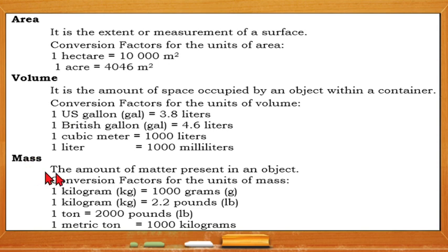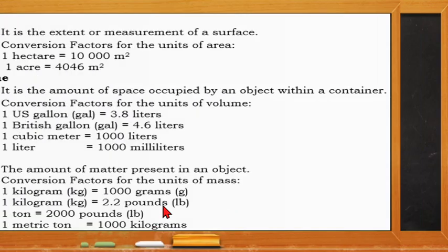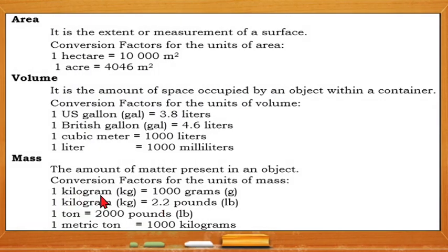Mass is the amount of matter present in an object. The conversion factors for the units of mass are as follows: one kilogram equals 1000 grams, one kilogram also equals 2.2 pounds (lb), one ton equals 2000 pounds, and one metric ton equals 1000 kilograms.